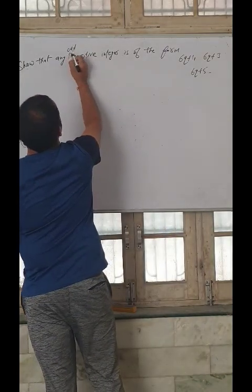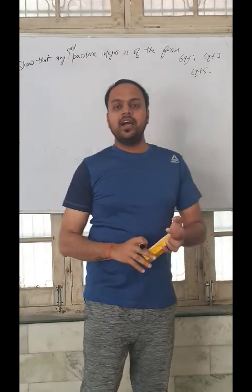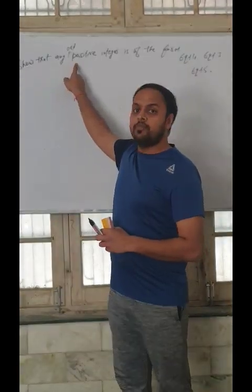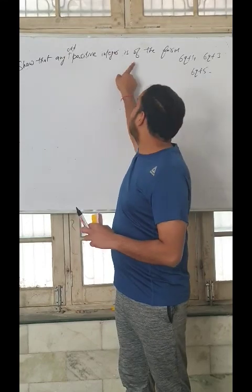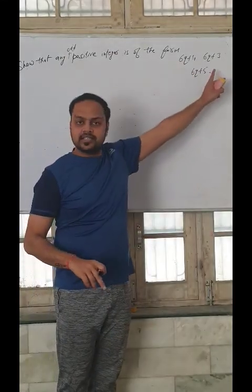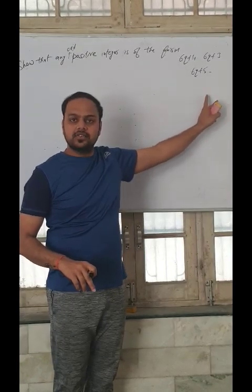All positive integers. First of all, we will understand the statement. Show that any odd positive integer is of the form 6q plus 1, 6q plus 3, and 6q plus 5.